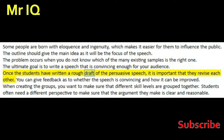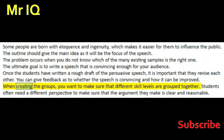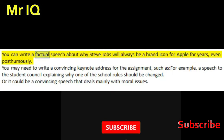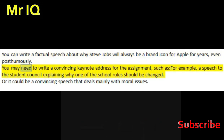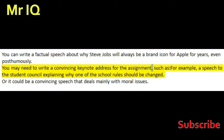Once students have written a rough draft of the persuasive speech, it is important that they revise each other's work. You can give feedback as to whether the speech is convincing and how it can be improved. When creating groups, you want to make sure that different skill levels are grouped together. Students often need a different perspective to make sure that the argument they make is clear and reasonable. You can write a factual speech about why Steve Jobs will always be a brand icon for Apple, even posthumously. You may also need to write a convincing keynote address, such as a speech to the student council explaining why one of the school rules should be changed.